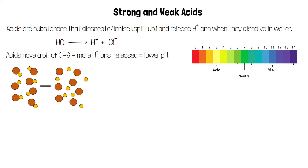This diagram shows the molecules of an acid dissociating when they dissolve in water. This is a strong acid, so it fully dissociates. That means that all of its molecules split up and release a hydrogen ion. None of the molecules are left undissociated.